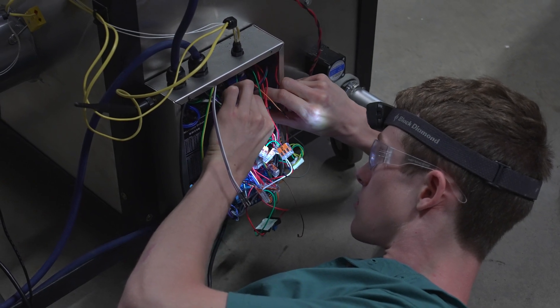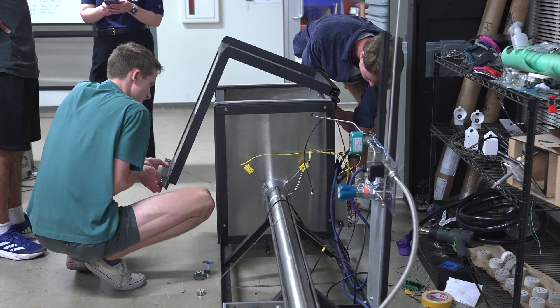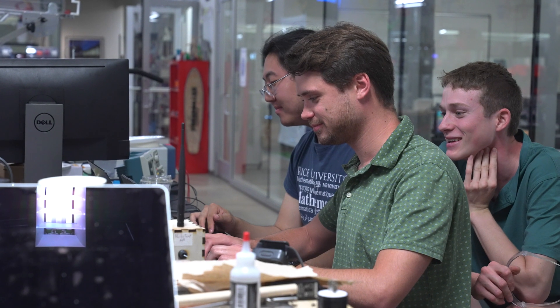Our team is designing and building a cold spray metal 3D printer which uses a process that involves velocity instead of heat to adhere material. In that way, we're able to produce parts that have much higher mechanical strength than traditional metal 3D printing methods.